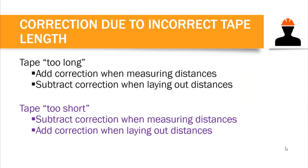Before that, let's familiarize ourselves with some important keywords that will be helpful as we compute distances or corrections later on. We have two important keywords: measuring and laying out. When we say measuring, we already have two fixed points in our field and all we need to do is measure the distance between those points. But when we say laying out, we do not yet have a point in our field but we have to locate that point using a given distance or measurement.